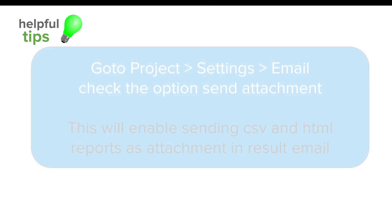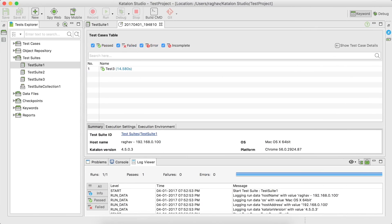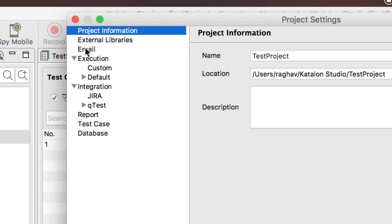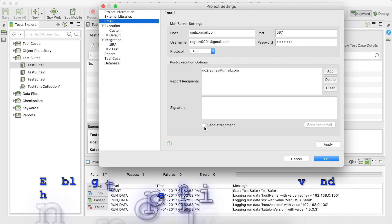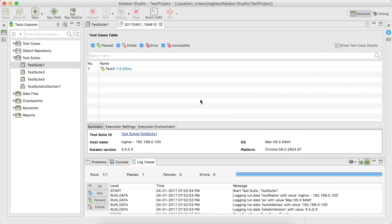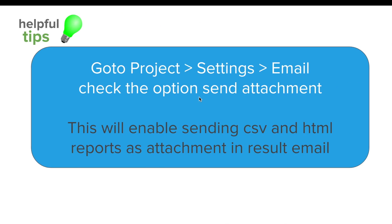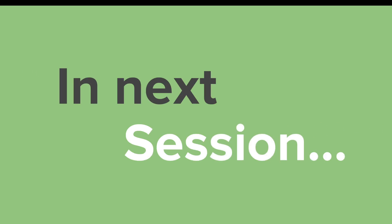This is how you can configure and send email notifications in Katalon Studio. Now let us look at some useful tips. You can go to Project Settings and Email, and check the option to send attachment. If you select this and click Apply and OK, then whenever you run your test suite, the email notification will also include a CSV file as well as an HTML file as an attachment. I will make the documentation links available in the description.